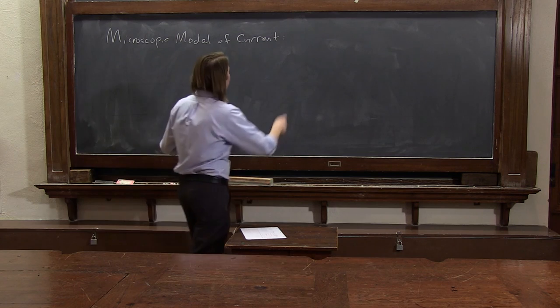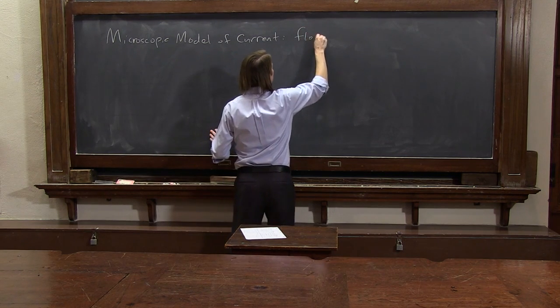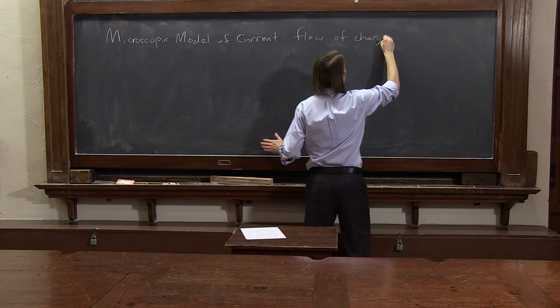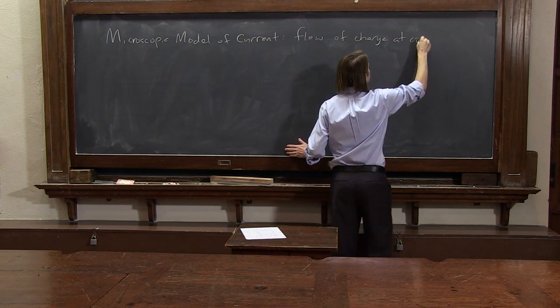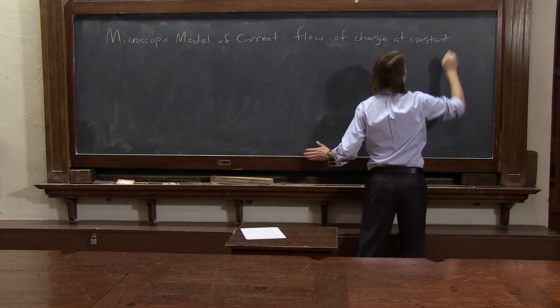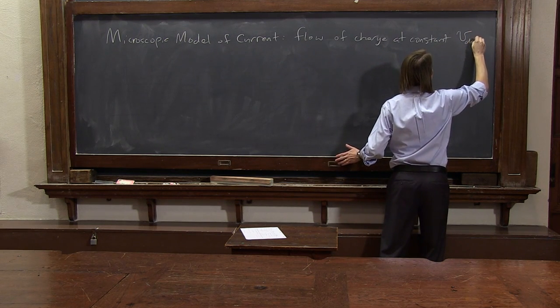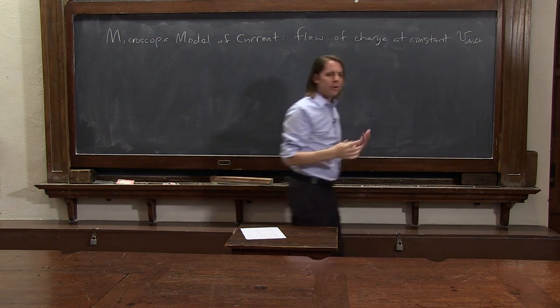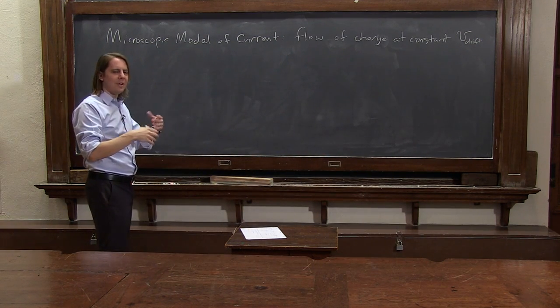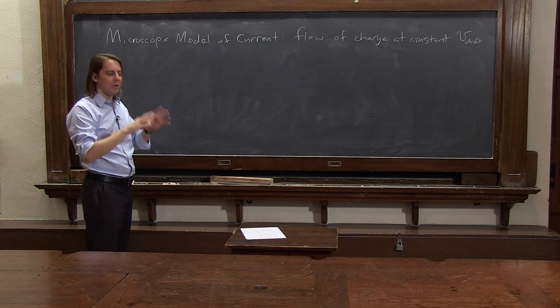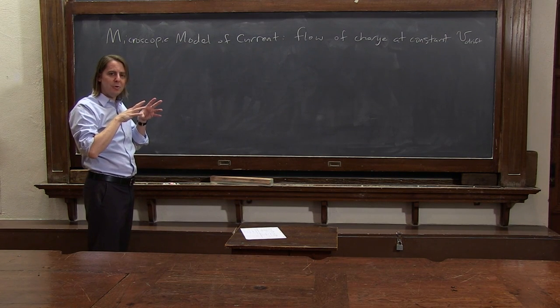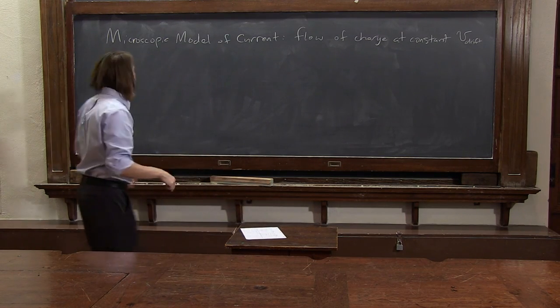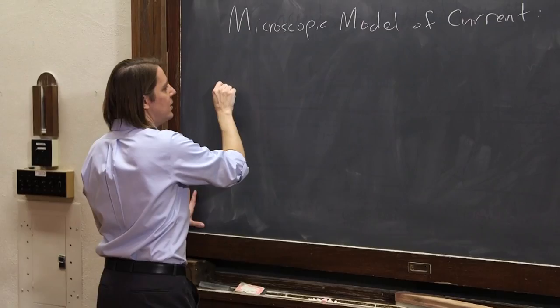So here's the microscopic model. We've got to think about the flow of charge at constant velocity, which we're going to call v drift. Because if you think about it, if we're going to have a steady current, that's the flow of charge past this plane. And if that's going to be steady, it's always going to be the same amount flowing. All the charges would just have to move at the same velocity in the most simple, uniform idea. So let's draw the wire and see what it's going to look like.